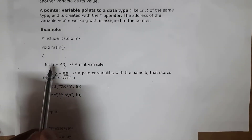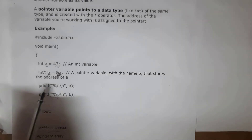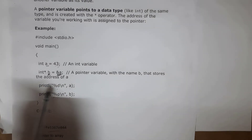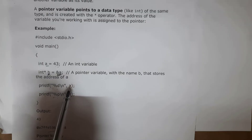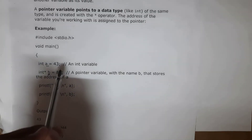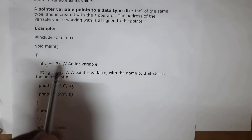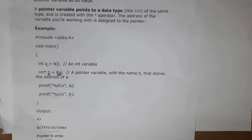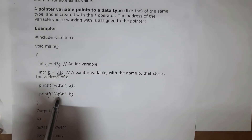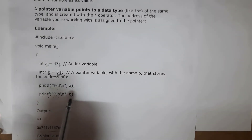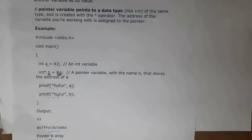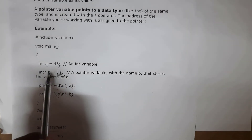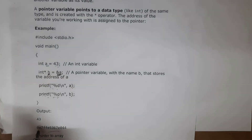Next I wrote printf with %d and a — whatever value is present in variable a will be generated as output, so I get 43. Similarly, I wrote printf with %p and b — this pointer variable b contains the address of a, so I will get output as 0x7ff. This address is where variable a is stored.